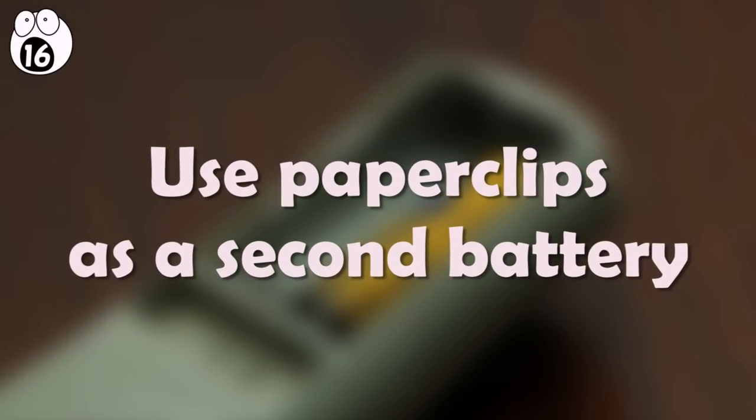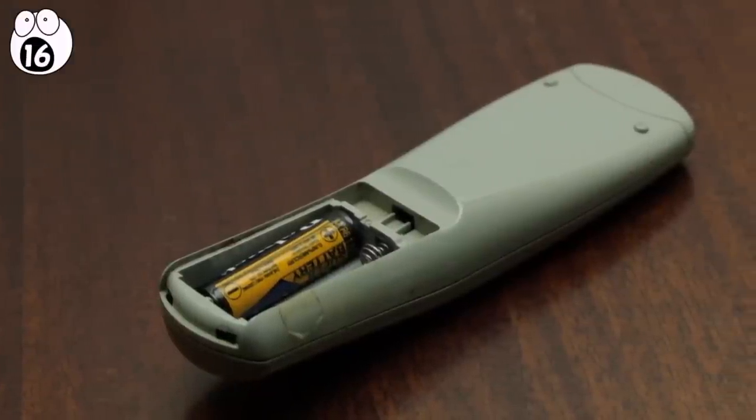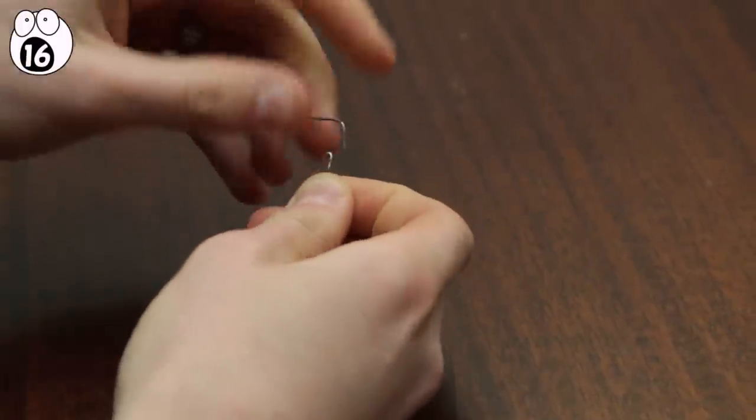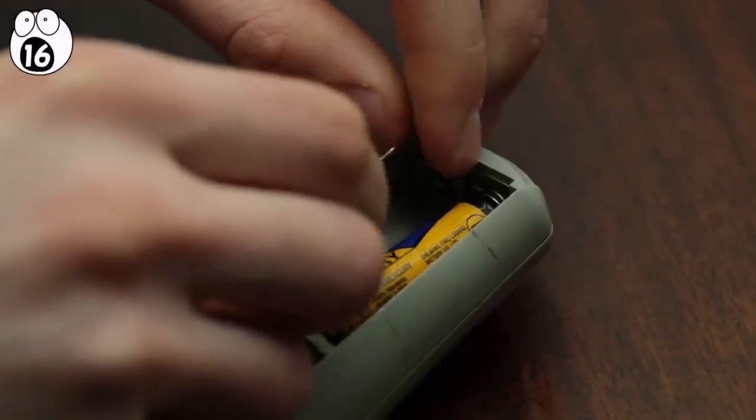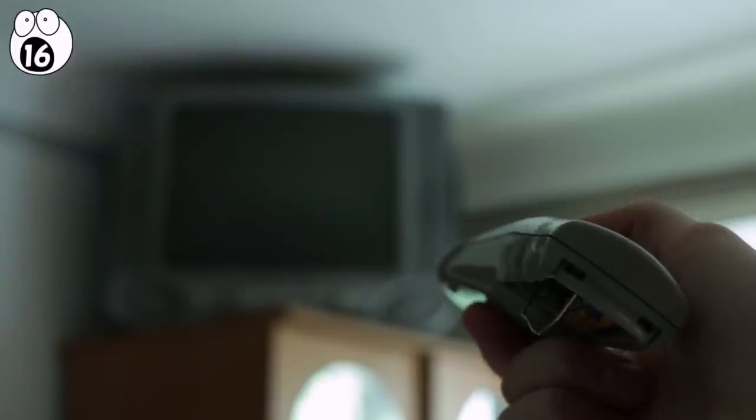Number 16. Use paper clips as a second battery. Sick of getting up and down to switch channels now that one of your remote control batteries has mysteriously disappeared? There is a way around this. A paper clip can be used as a stand-in second battery. Bend it so that one end is touching the positive and the other end the negative end of the battery holder, and now you've got a stand-in battery. The range of your remote might be slightly reduced with this method, but it's still better than nothing.